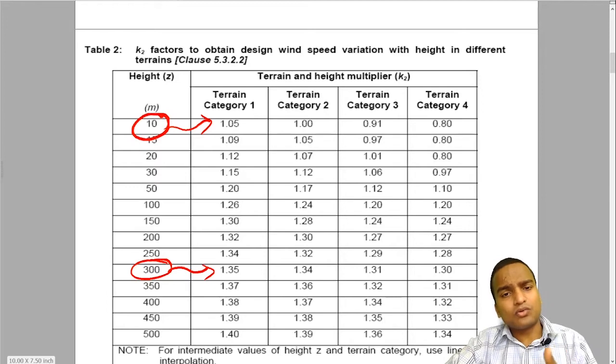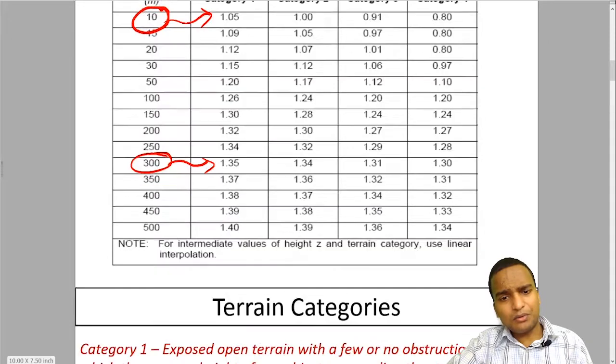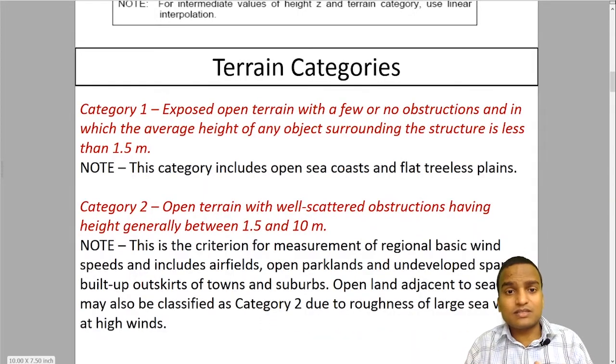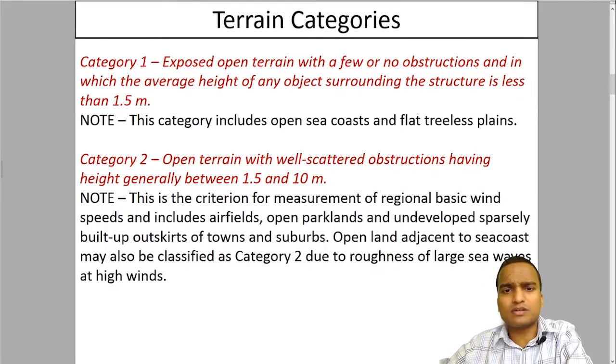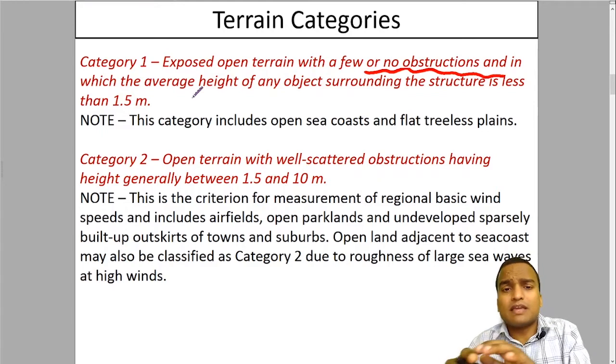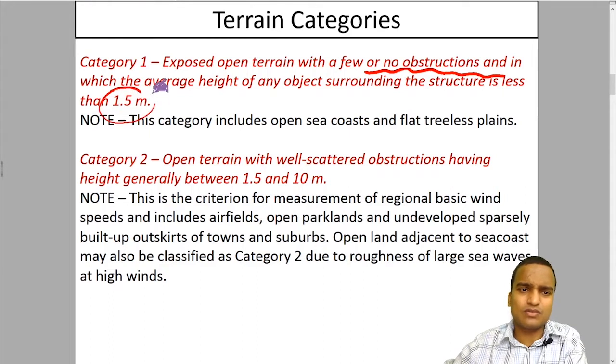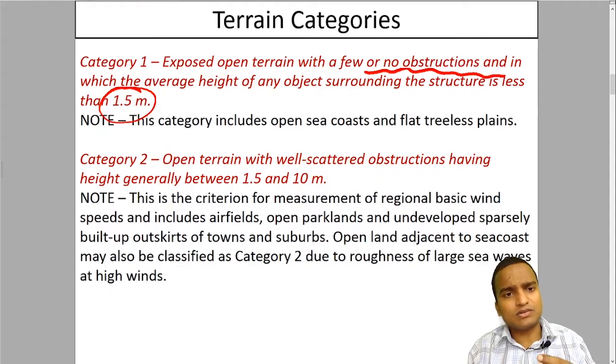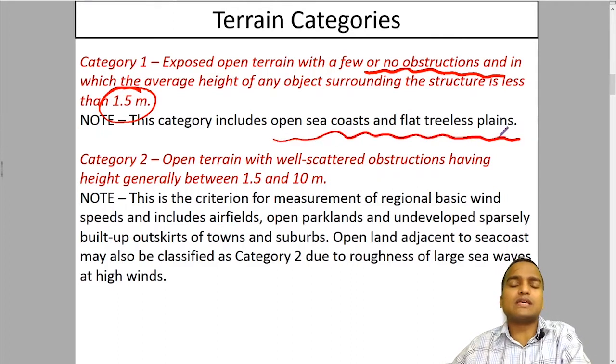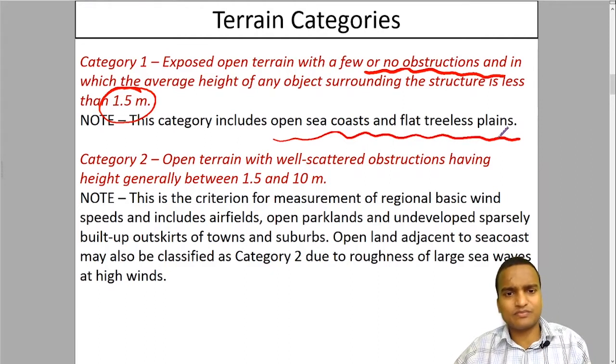Let us see what are these terrain categories. Terrain category 1 are those terrains in which our structure is exposed with few or no obstructions. Almost no obstruction is there, and the average height of any object surrounding the structure is less than 1.5 meter only. Those structures include open sea coasts and flat treeless plains, means deserts or fields.